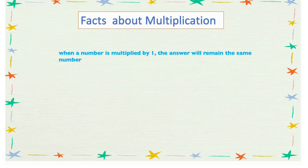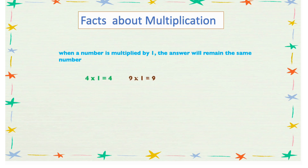There are some facts we need to know about multiplication. When a number is multiplied by 1, the answer will remain the same number. For example, 4 times 1 is 4, 9 times 1 is 9, 20 times 1 is 20, and so on.